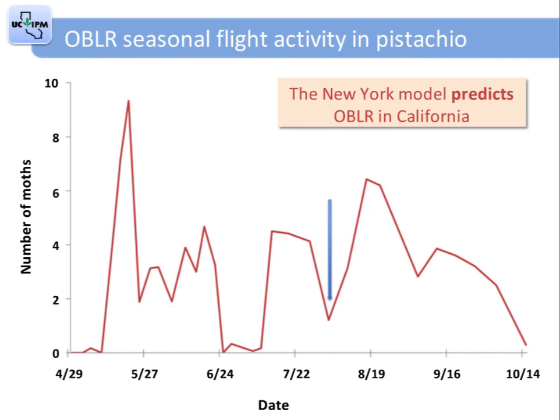In addition to monitoring traps, it's important to keep records of other production and management activities in the field. For example, see this dip in the population on August 7th? Without records of orchard practices, the population drop could lead to unnecessary speculation. As it happened, this particular orchard was treated with an insecticide targeting another pest on that day.